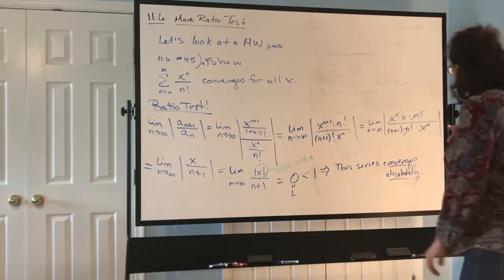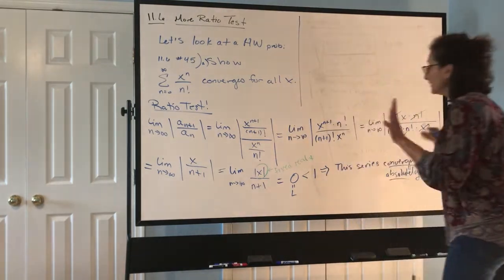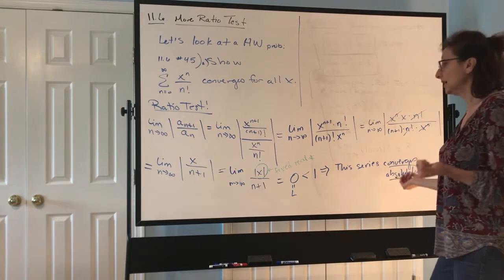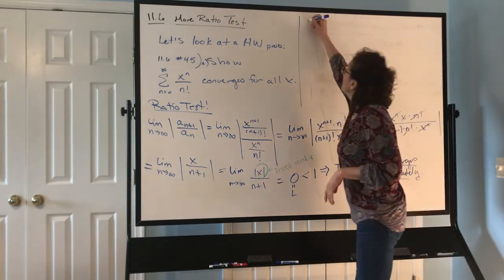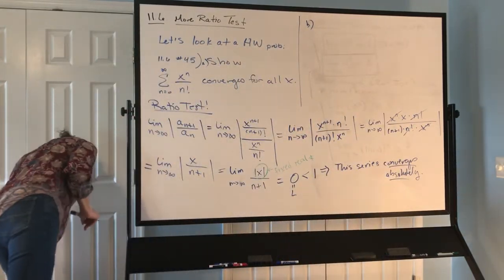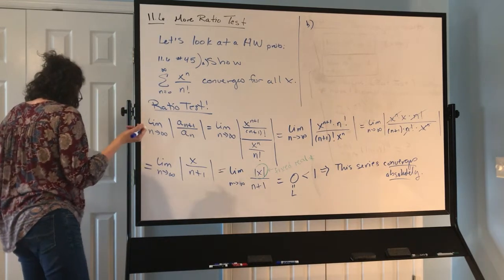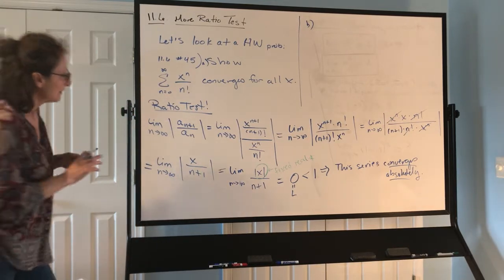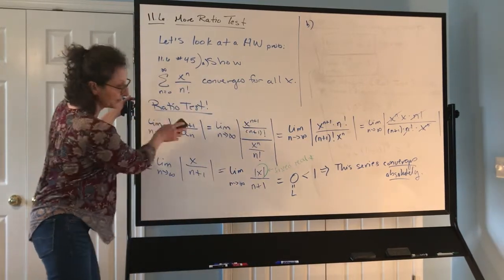That's where we're heading — instead of doing it once for x=100, once for x=−3, once for x=5. This proves, using the ratio test, that the series converges for all x. Now let's see what part B says. Before we do part B, let's recall something. Number 45, part B — I'm going to erase this now.